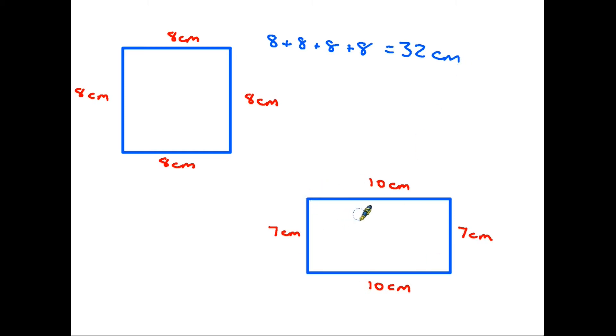And the rectangle is exactly the same. With the rectangle we have two opposite sides are equal. The method is exactly the same - it is 10 plus 7 plus 10 plus 7, so the perimeter is 34 centimeters.